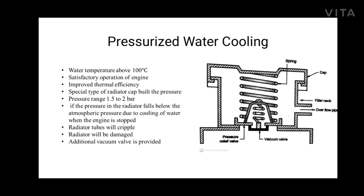Now we will discuss pressurized water cooling. It is well known that the boiling temperature of water increases with the increase in pressure. This fact is used to cool heavy-duty engines and the method is known as pressurized water cooling. This system allows the temperature of water to be kept above 100 degrees centigrade, resulting in satisfactory operation of the engine and improved thermal efficiency. The pressure in the system is built up by means of a special type of radiator cap in the range of 1.5 to 2 bar. As the pressure builds up, the volume of water increases with temperature, allowing the temperature to exceed beyond 100 degrees centigrade without formation of steam due to the existing high pressure.